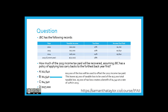If you said B) $1,540, you'd be correct. That's because the policy is to carry back the tax loss to the furthest year first. So $17,000 would first be carried back to 2012 to use up the $10,000 taxable income there, which means there's $7,000 of loss left to be applied to 2013. $7,000 times the tax rate of 22% equals $1,540. The question asked specifically how much of the 2013 income tax paid will be recovered, and that is $7,000 × 22% = $1,540.